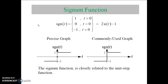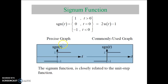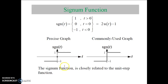Next is the signum function. The signum function sgn(t) is defined as: 1 for t greater than 0, 0 for t equal to 0, and minus 1 for t less than 0. It can also be expressed as sgn(t) equal to 2u(t) minus 1. This is the graphical look for the signum function, which is closely related to the Unit Step function.